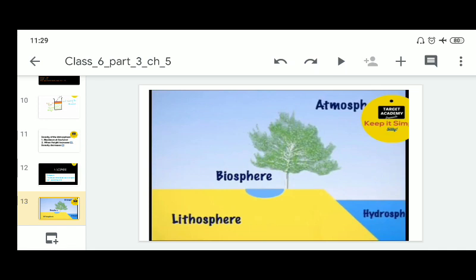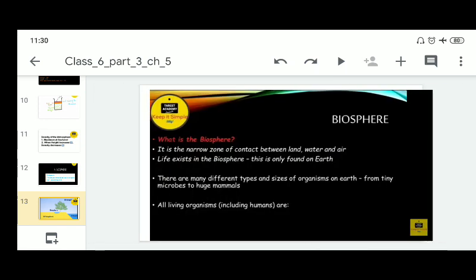There could be submergence of land as happened in the case of tsunami recently. Parts of Andaman and Nicobar Islands were submerged under water. Discharge of waste material into lakes and rivers makes the water unsuitable for humans. It also damages other forms of life. These all are related to human beings.